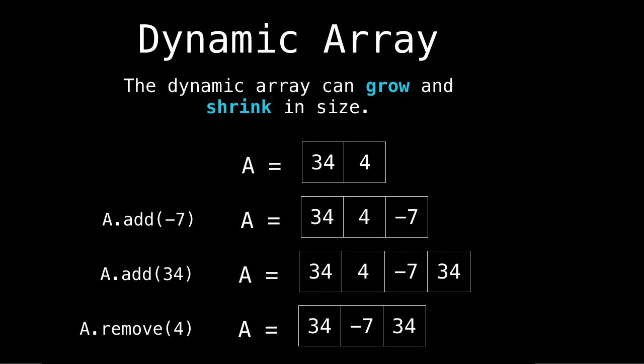So if we have A containing 34 and four, then if we add minus seven, it gets appended to the end. If we add 34 again, then it'll add it to the end. And we can also remove elements. So you see here, our dynamic array shrank in size. Pretty cool, right?